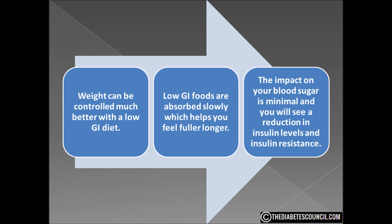Weight can be controlled much better with a low GI diet. Low GI foods are absorbed slowly, which helps keep you fuller longer. The impact on your blood sugar is minimal and you will see a reduction in insulin levels and insulin resistance. Recent studies from the Harvard School of Public Health indicate that the risk of type 2 diabetes and coronary heart disease are strongly related to the GI of the overall diet. The World Health Organization and Food and Agriculture Organization recommends that people in industrialized countries base their diets on low GI foods in order to prevent the most common diseases of affluence such as coronary heart disease, diabetes, and obesity.